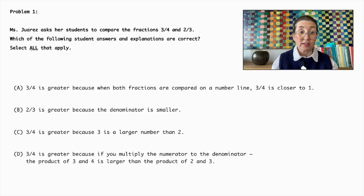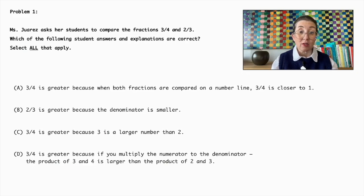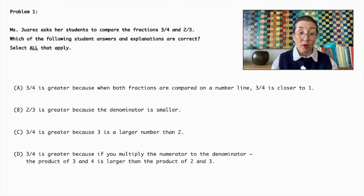Option B: Two-thirds is greater because the denominator is smaller. Option C: Three-quarters is greater because three is a larger number than two. Option D: Three-quarters is greater because if you multiply the numerator by the denominator, the product of three and four is larger than the product of two and three.